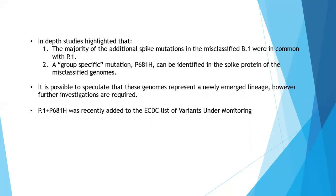More in-depth analysis allowed us to observe that these genomes share a consistent proportion of their mutations with B.1 lineages, but they still present a group-specific mutation — more specifically the B681H mutation on the spike protein. It is possible at this point to speculate that these genomes represent a newly emerged lineage; however, further investigations are required to verify these hypotheses.